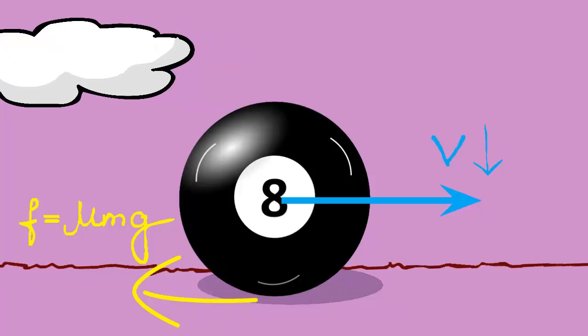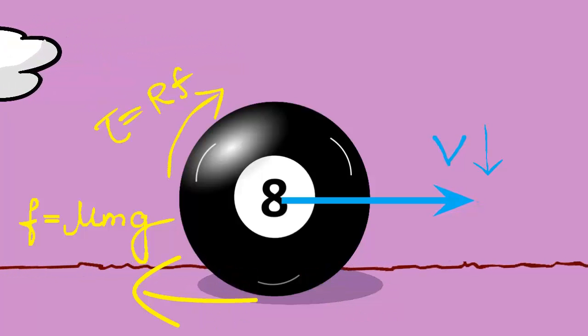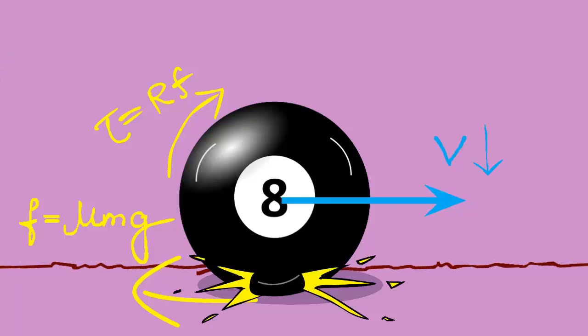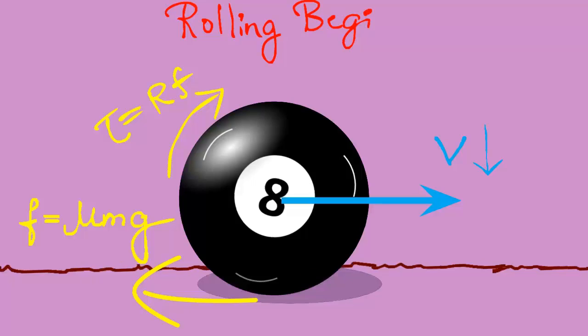Look, it is producing a clockwise torque relative to the center. And that starts imparting a clockwise spin. So the ball starts rolling.